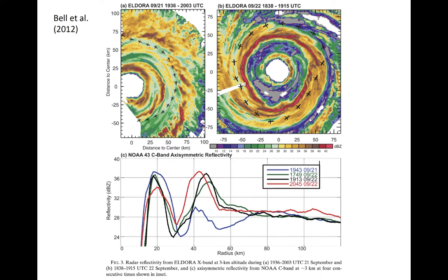This example shows the evolution of an eyewall replacement cycle observed by the Eldora X-band radar on a NOAA P3 flying through Hurricane Rita in 2005 during the Rain-X field campaign. In the upper left image, a primary eyewall is obvious surrounding the clear echo eye in the center.